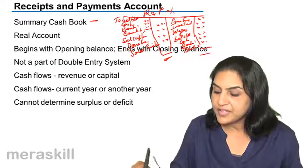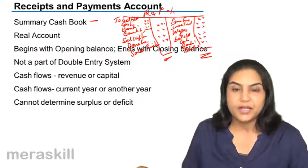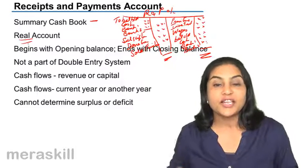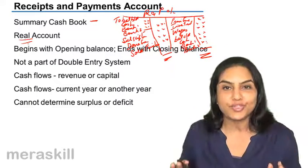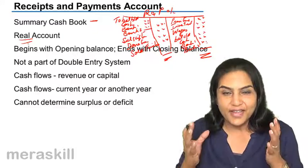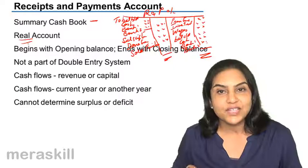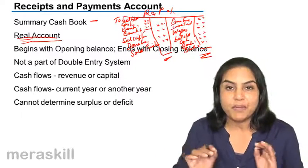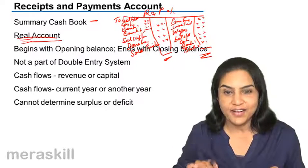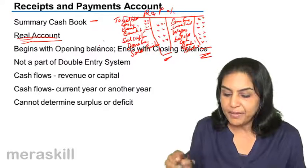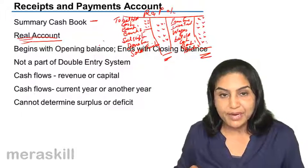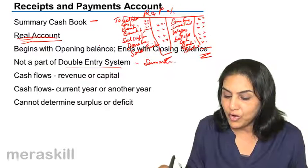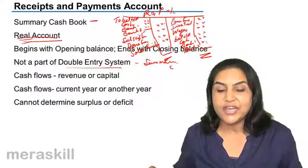Since it is a summary cash book, if you are asked about the nature of the account — it's not a personal account. It basically denotes cash. Cash is a real account; it is an asset. Therefore the receipts and payments account is in the nature of a real account. It begins with the opening balance and ends with the closing balance, but it is not a part of the double entry system. It is only a summary of all the cash transactions that have occurred.